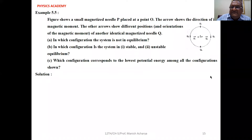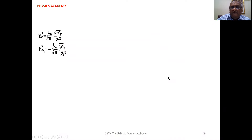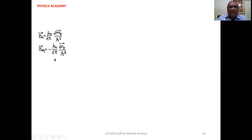Dipole Q, or magnetized needle Q, is placed at different positions in the magnetic field of magnetized needle P. The magnetic field of magnetized needle P on the axis is: B_axial = (μ₀/4π)(2Mp/R³), and this field is in the direction of the magnetic moment of P. The equatorial field is: B_equatorial = -(μ₀/4π)(Mp/R³). The negative sign means the field at any point on the equator is in the opposite direction of the magnetic moment.